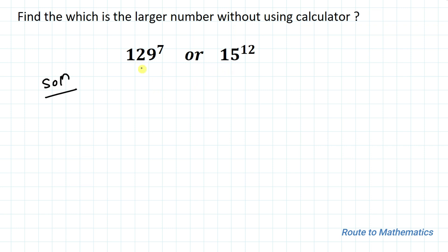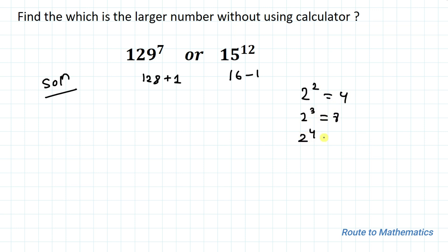One thing you can notice is that 129 is just one more than 128, and 15 is just one less than 16, and both 128 and 16 are powers of 2. We know that 2^2 = 4, 2^3 = 8, 2^4 = 16, 2^5 = 32, 2^6 = 64, and 2^7 = 128.